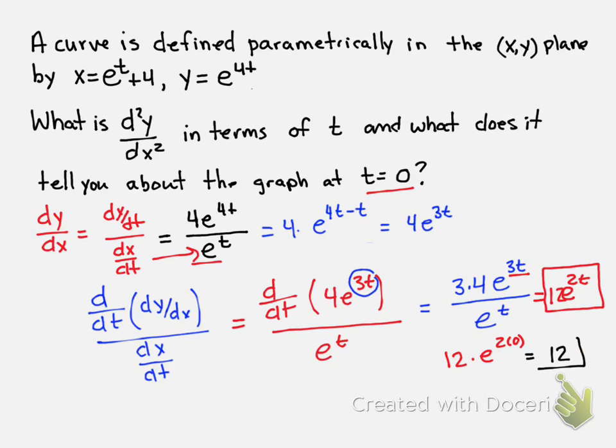That means at t equals 0, the graph is concave up because the second derivative of y with respect to x is greater than 0. That's a key concept you'll be asked about throughout BC Calculus.